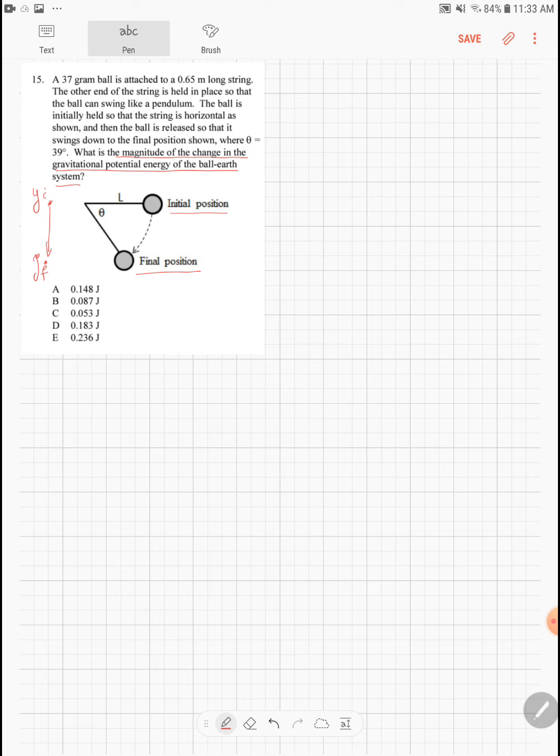What we need to find is the change of the potential energy, which is given by the mass of that ball times g times the gravity constant times delta y.